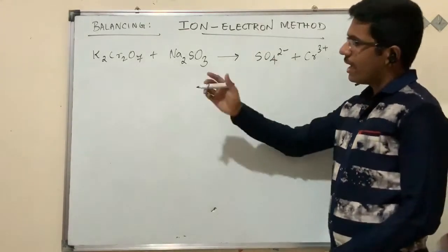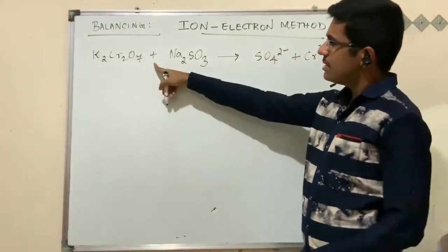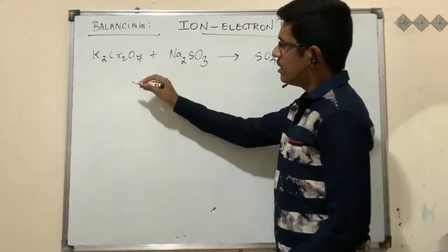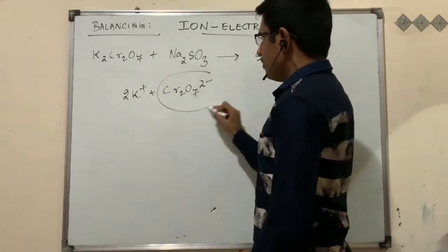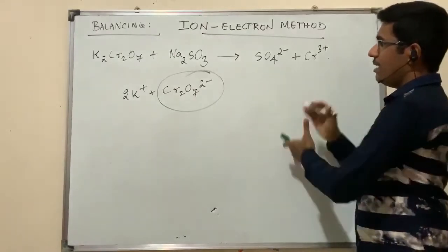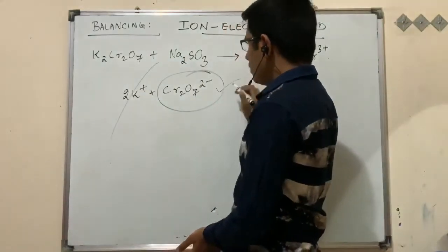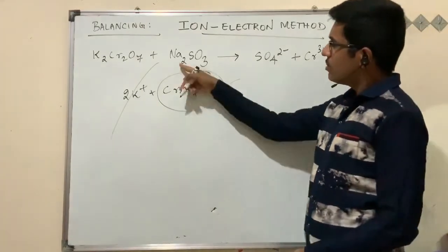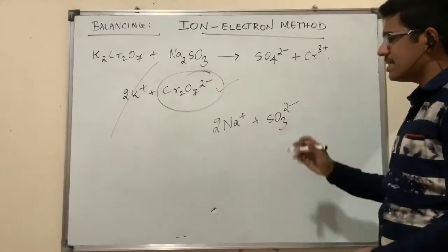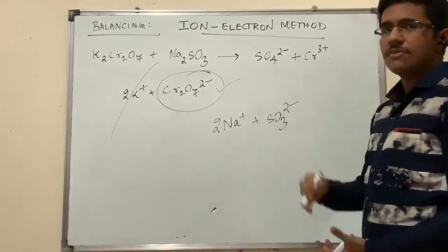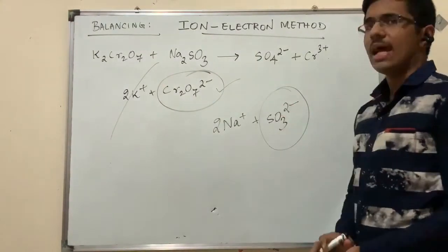To balance this, the first procedure is to make sure all reactants are in ionic form. Potassium dichromate gives two potassium ions and dichromate ion (Cr₂O₇²⁻). Since potassium doesn't appear on the product side, we only need the dichromate ion. Sodium sulfite ionizes to two Na⁺ ions and sulfite ion (SO₃²⁻). Since sodium doesn't appear on the right side, we only need SO₃²⁻.